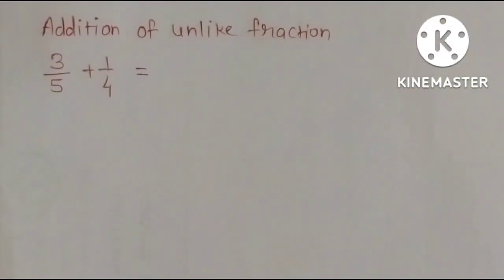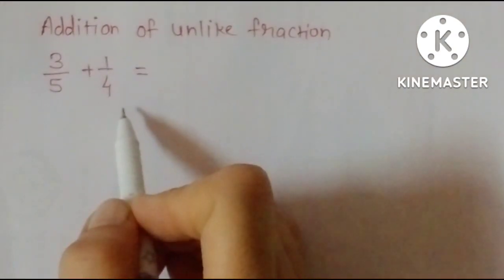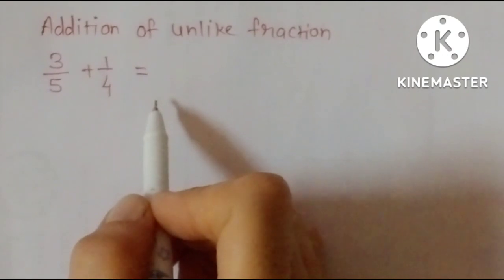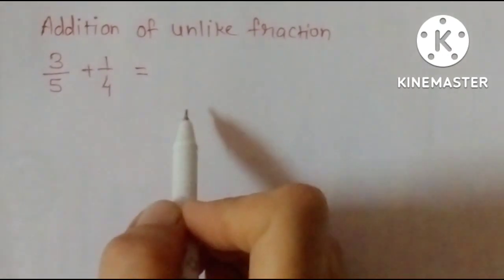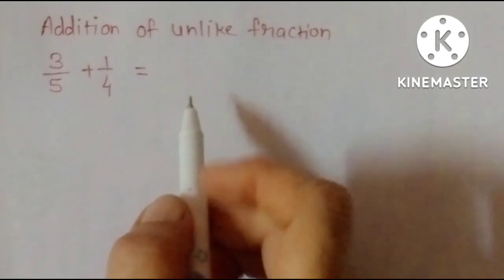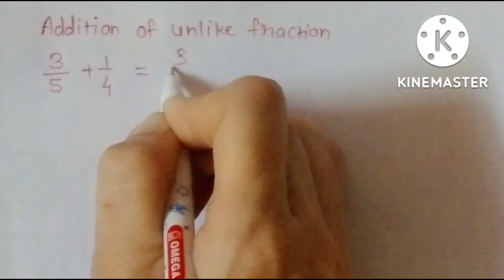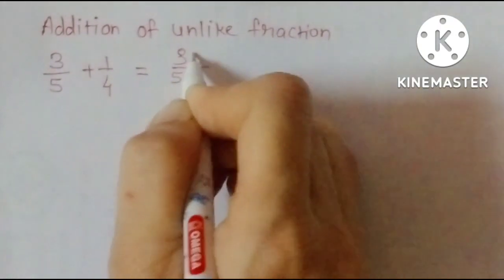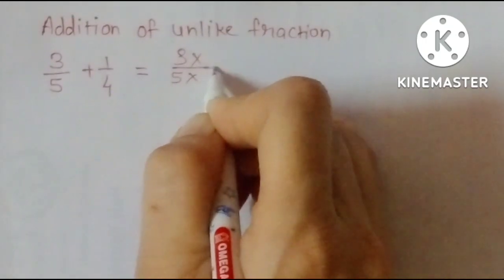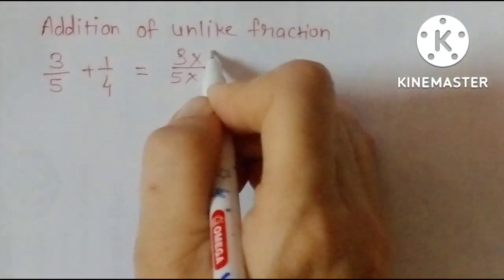Addition of unlike fractions: 3 upon 5 plus 1 upon 4. Convert unlike fractions to like fractions and then add them. 3 upon 5 times the other denominator 4.